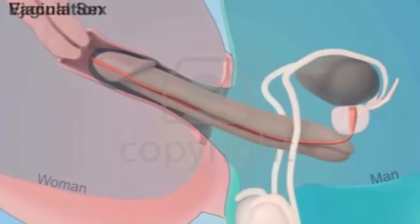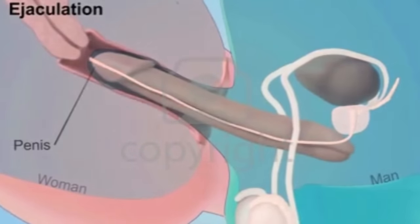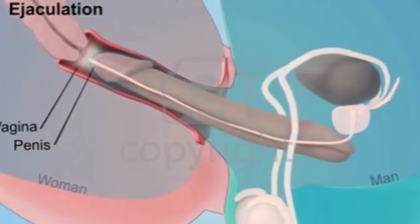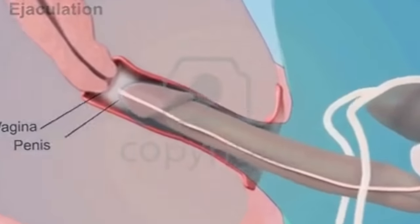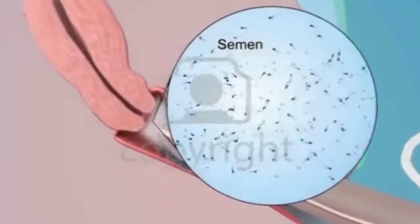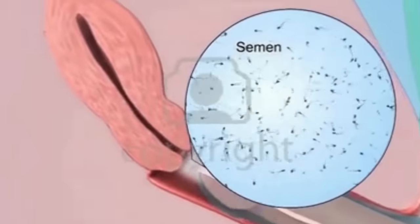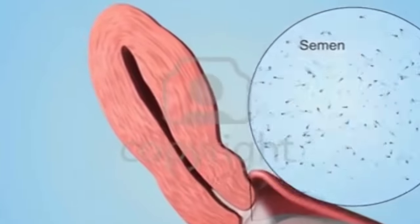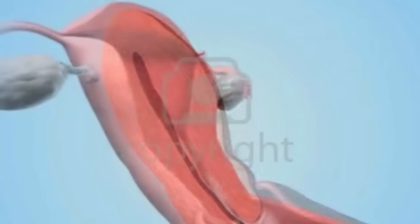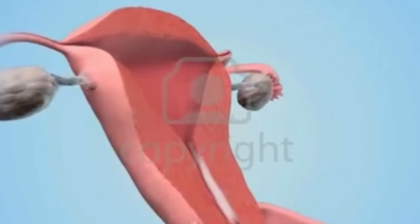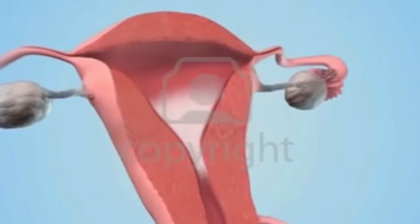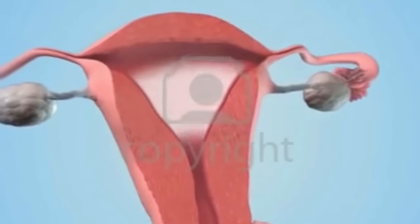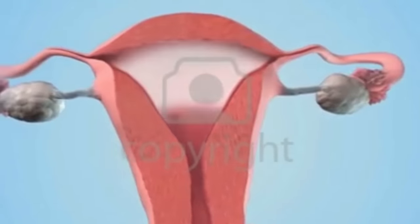The vagina is the place where semen from the male is deposited into the female's body at the climax of sexual intercourse, commonly known as ejaculation. Around the vagina, pubic hair protects the vagina from infection and is a sign of puberty.